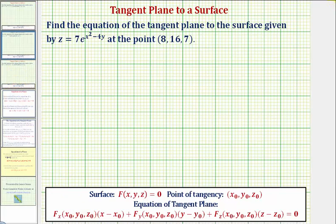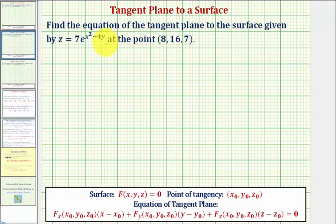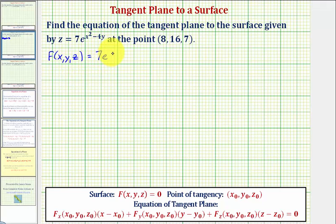Going back to our notes, our first step is to write the equation of our surface in the form where we have a function of x, y, and z set equal to zero. To do this we subtract z on both sides of the equation. So we can write F(x, y, z) = 7e^(x² - 4y) - z = 0.